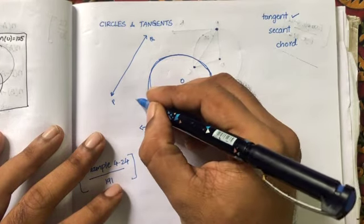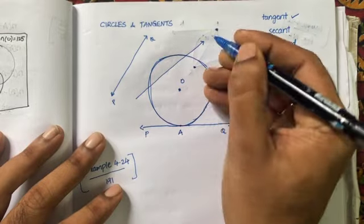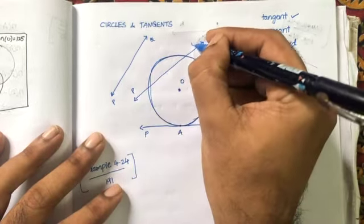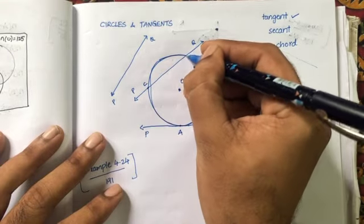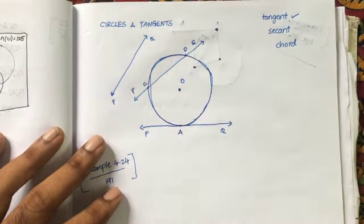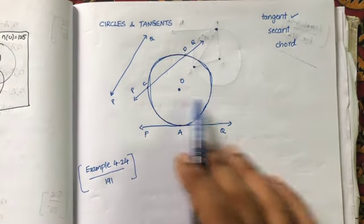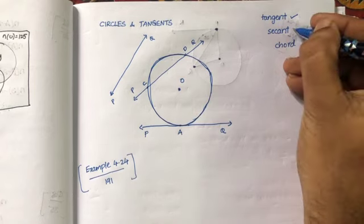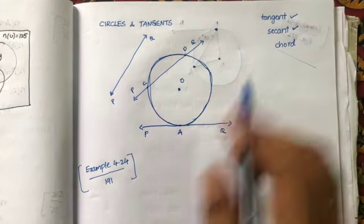In the third case, PQ meets the circle at two points, C and D. When a straight line meets the circle at two points, it is called a secant. What is it called? A secant.